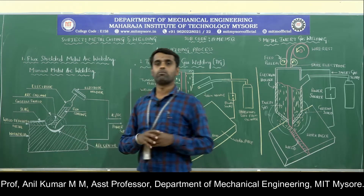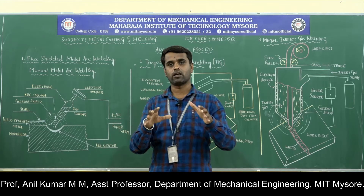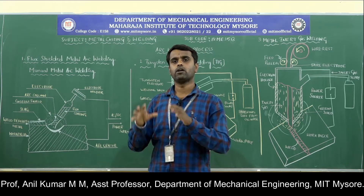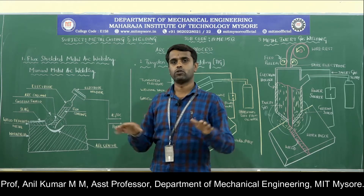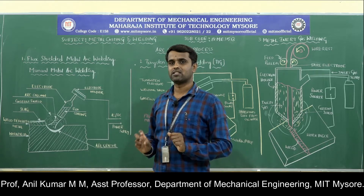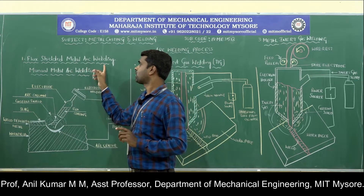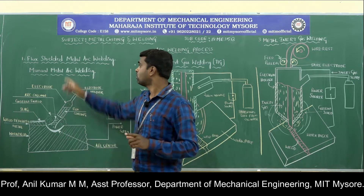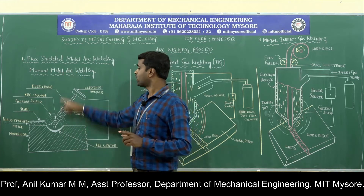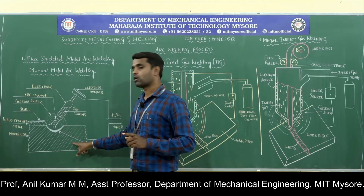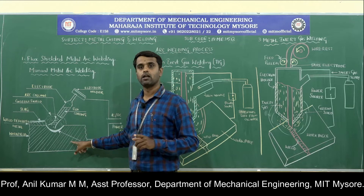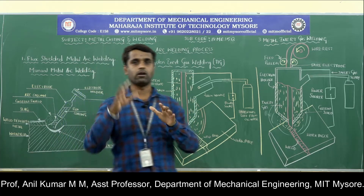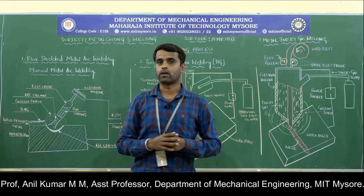The flux forms a gaseous shield and it protects the molten metal from the atmosphere, and the welding takes place. That is the principle of the flux shielded metal arc welding process. The electric arc is struck between the flux-coated consumable electrode and the workpiece material, and that flux forms a gaseous shield protecting the molten metal from the atmosphere.